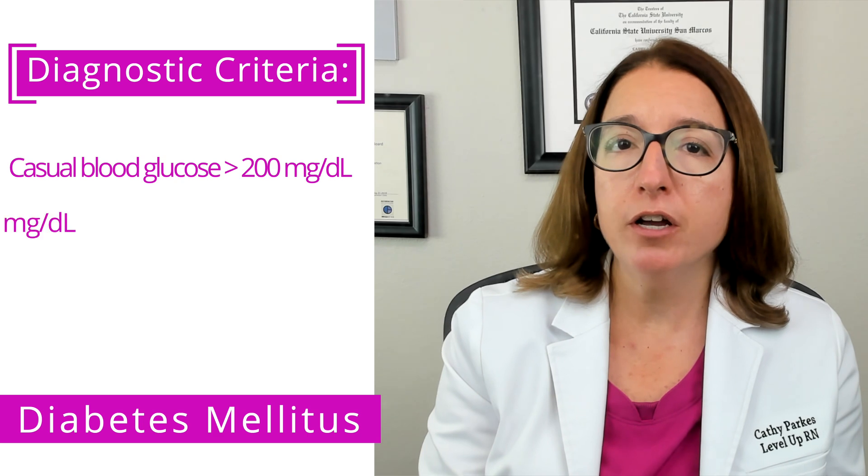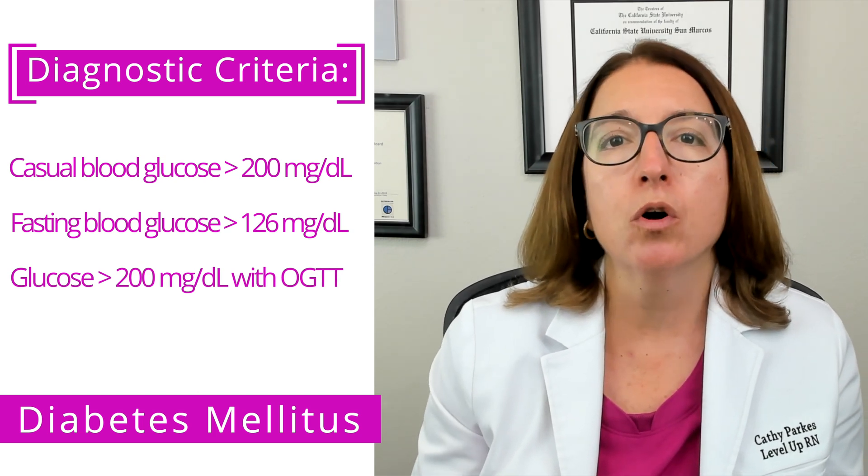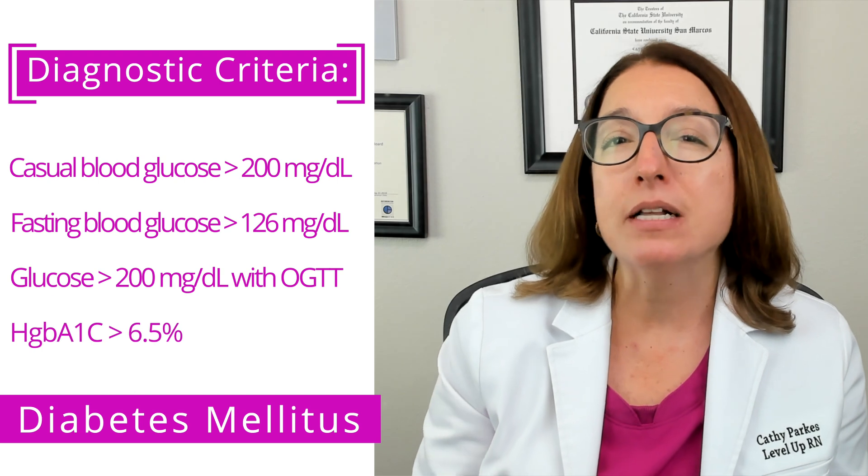Our cool chicken hint to help you remember the warm, dry skin is: warm and dry, sugar's high. Diabetes is diagnosed when the patient has two abnormal test results. This includes a casual blood glucose level over 200, a fasting blood glucose level over 200 with an oral glucose tolerance test, or an A1c over 6.5%. The HgbA1c reflects the patient's glucose levels over the past two to three months and is the best way to monitor treatment compliance.